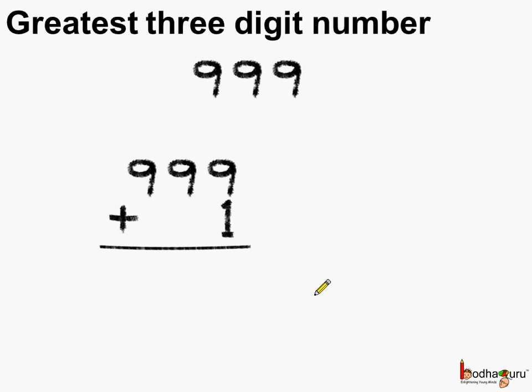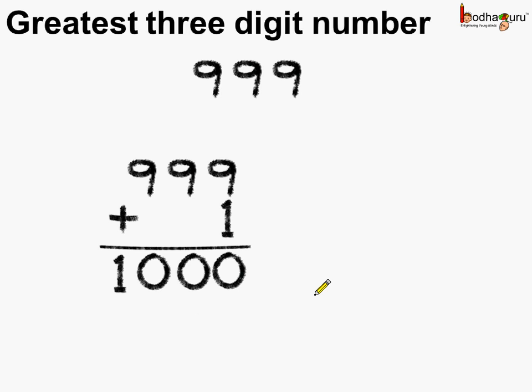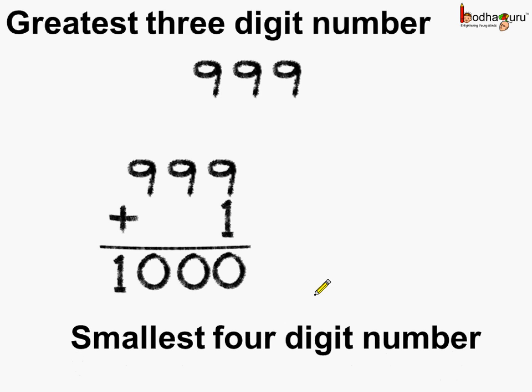Let us add: 9 plus 1 is 10, carry over 1. Again 9 plus carry over is 10. Again 9 plus carry over 1 is 10. So we get 1000. And 1000 is the smallest 4-digit number.